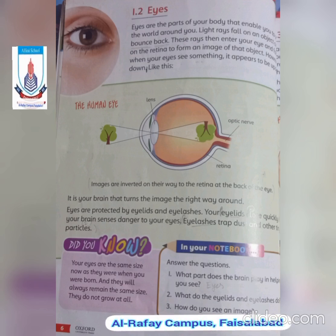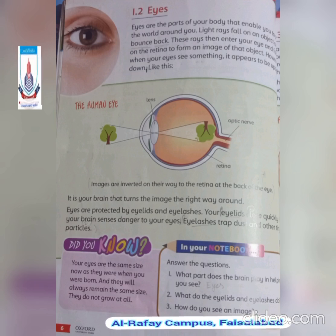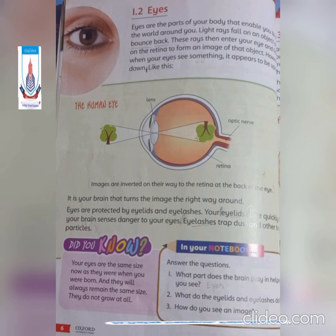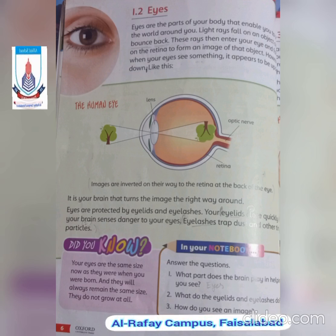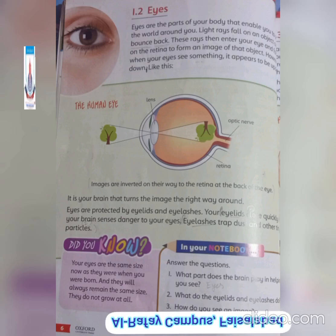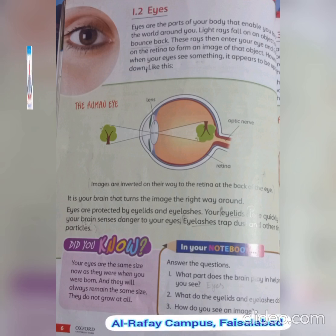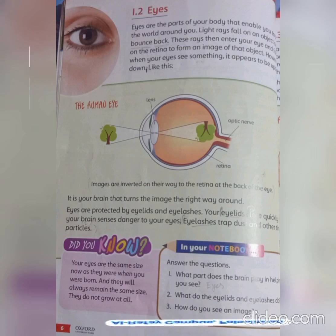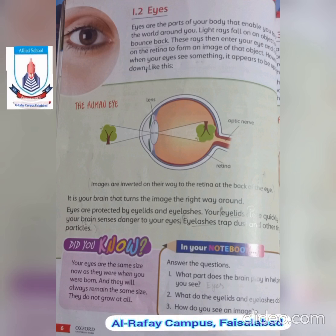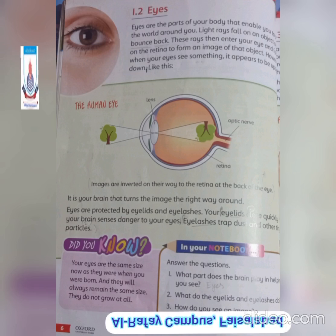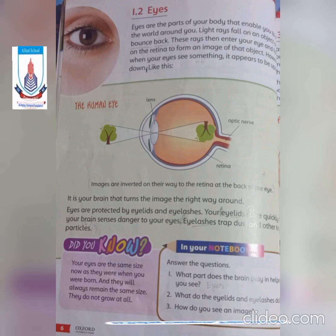Let's start reading. Super Scientist. This diagram shows the line: images are inverted on their way to the retina at the back of the eye.